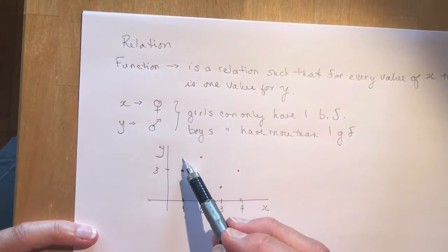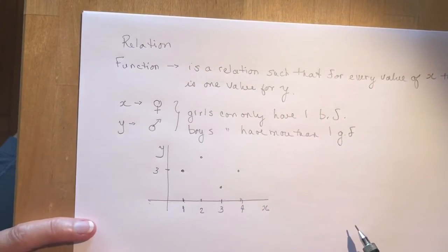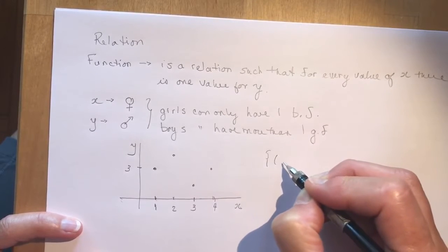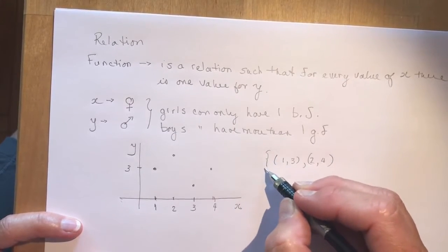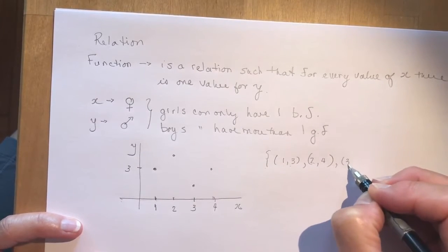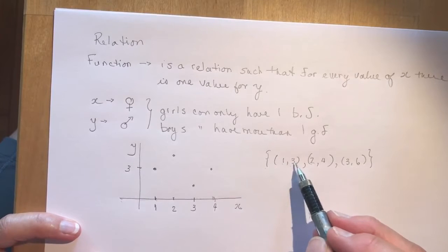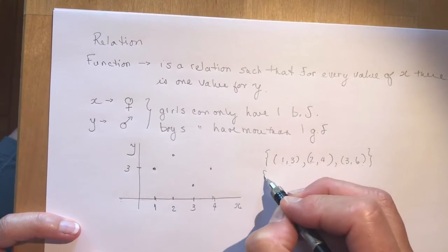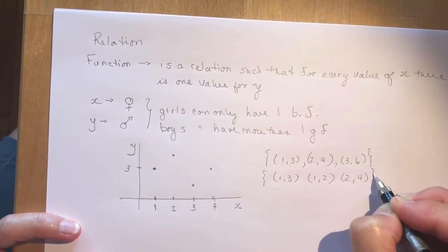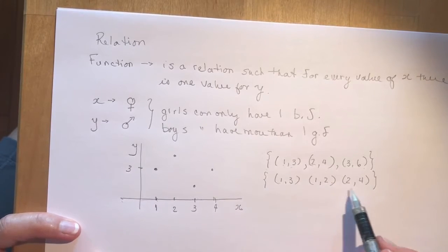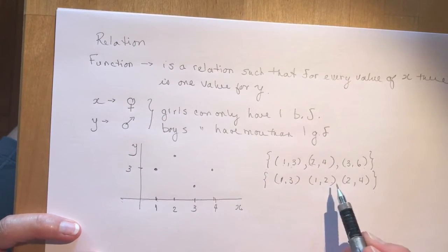If I put another dot right above it, then all of a sudden it wouldn't be a function — for every value of x there's one value for y. Now that could be written in set notation. So let's say {(1,3), (2,4), (3,6)} — is this a function? Absolutely, because 1 has 3, 2 has 4, and 3 has 6. I could make this not a function very easily. Now because this one has two values — looking at set notation, you can just check: does the 1 only have one y value? Nope, it has different y values, so that's not a function.